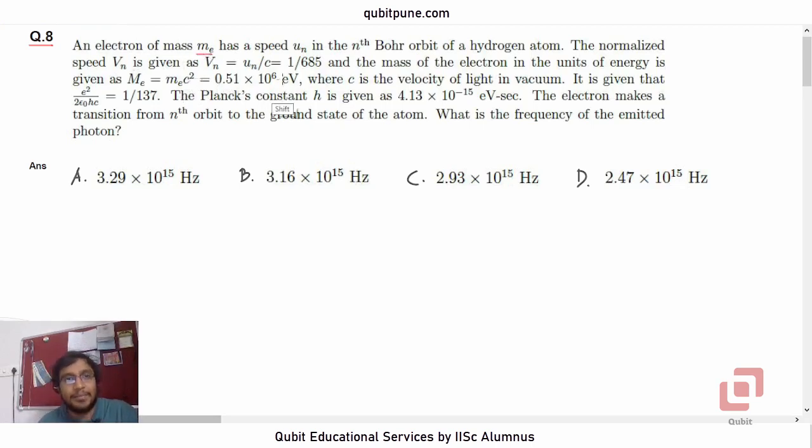Let us read the statement first. An electron of mass Me has a speed Un in the nth Bohr orbit of a hydrogen atom. The normalized speed Vn is given as Vn equals Un by c, which is 1 over 685, and the mass of the electron in the units of energy is given as Me c squared equals 0.51 times 10 to the power 6 electron volt, where c is the speed of light in vacuum. It is given that e squared upon 2 epsilon naught hc is 1 over 137. The Planck's constant h is given as 4.13 times 10 raised to negative 15 electron volt second. The electron makes a transition from the nth orbit to the ground state of the atom. What is the frequency of the emitted photon?